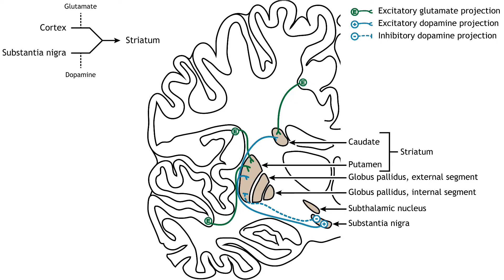Dopamine plays an important role in basal ganglia function. Parkinson's disease results when dopamine neurons in the substantia nigra degenerate and no longer send appropriate inputs to the striatum. Dopamine projections can have either excitatory or inhibitory effects in the striatum depending on the type of metabotropic dopamine receptor the striatal neuron expresses. Dopamine action at a neuron that expresses the D1 receptor is excitatory, while dopamine action at a neuron that expresses the D2 receptor is inhibitory.